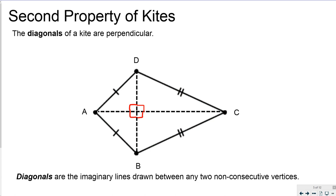The second property of kites: the diagonals of a kite are perpendicular, and in case you forgot diagonals are the imaginary lines drawn between any two non-consecutive vertices. So in a kite these imaginary lines are always perpendicular.